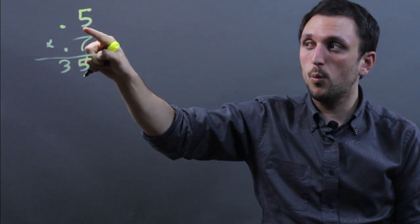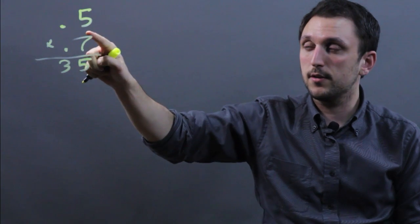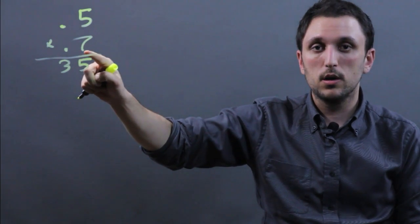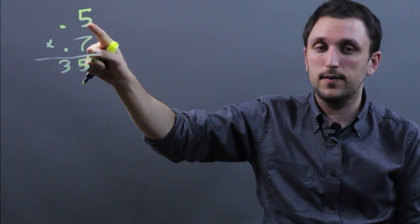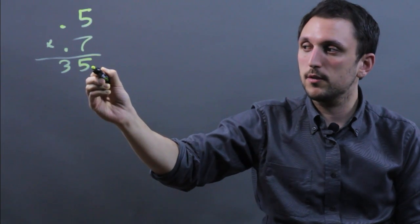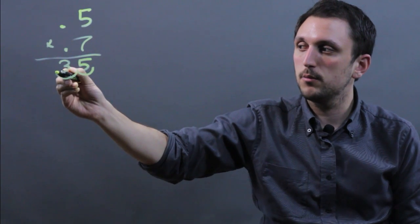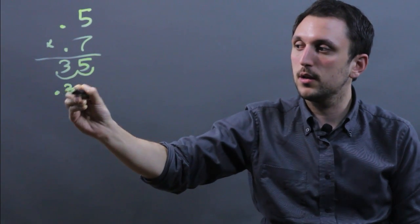Now, up here we have one number to the right of the decimal. Here we have one number to the right of the decimal. So we're going to add that and that's two and we're going to move the decimal place over two times. So our answer is 0.35.